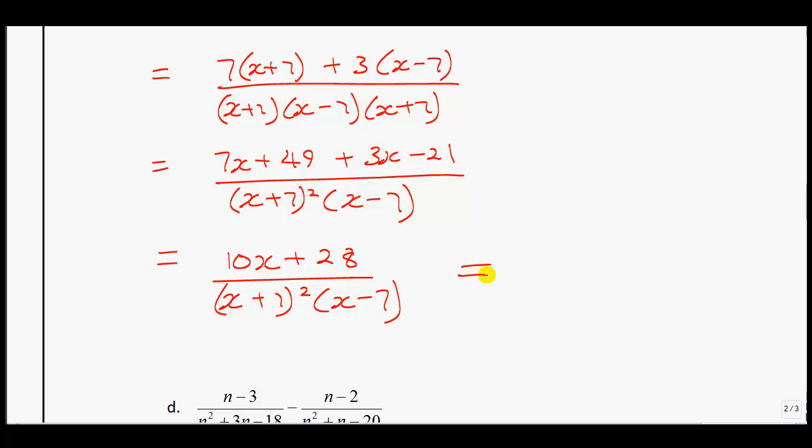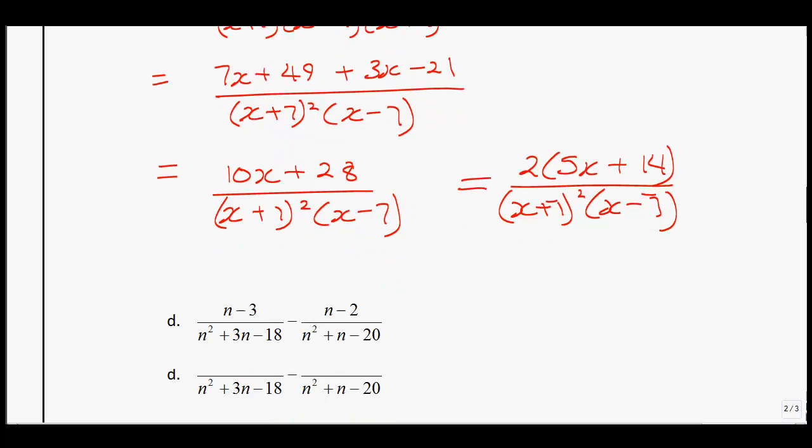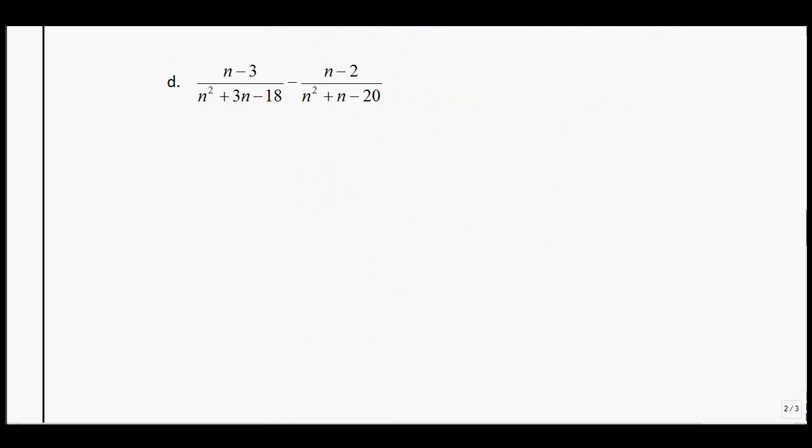The last thing you could do to go one more step further is this is a unique situation that in the numerator, the 10x and the 28, it does have a 2 that you could factor out, leaving you with 5x plus 14, all over that common denominator of x plus 7 squared and x minus 7. Whenever you can factor something out like that at the end, I'd like you to try. That was the first one we've been able to do that for.